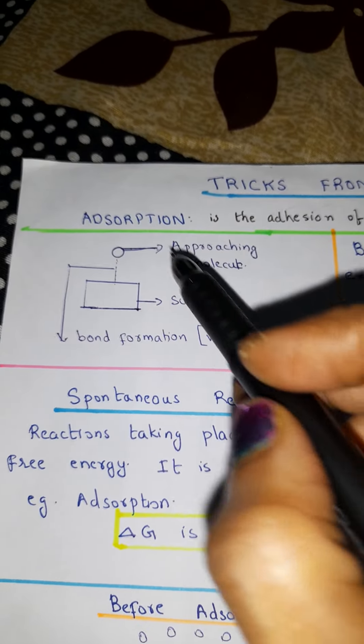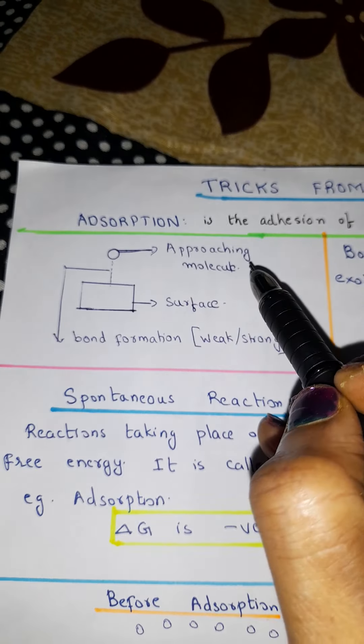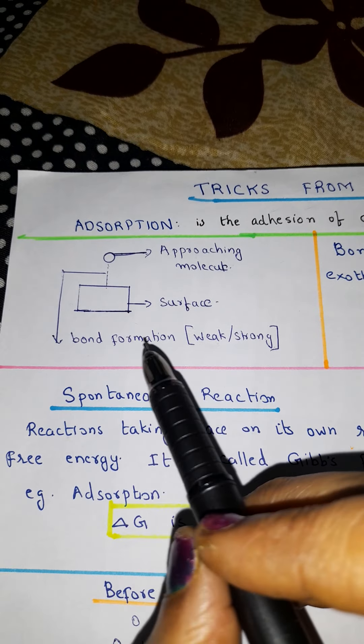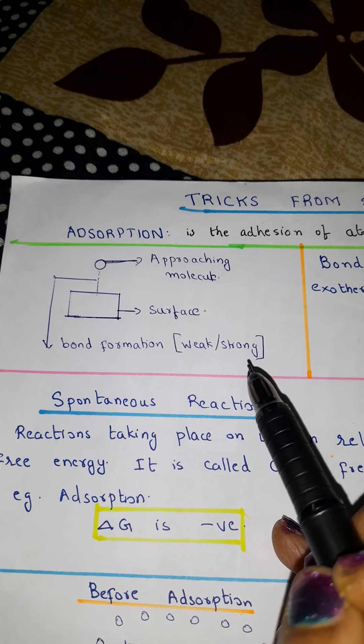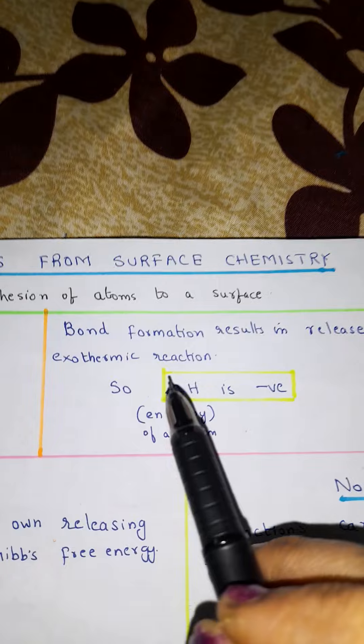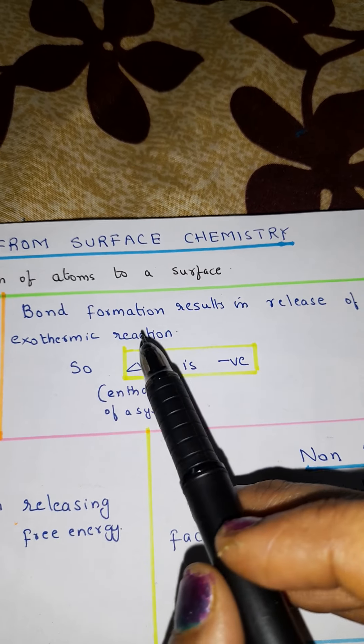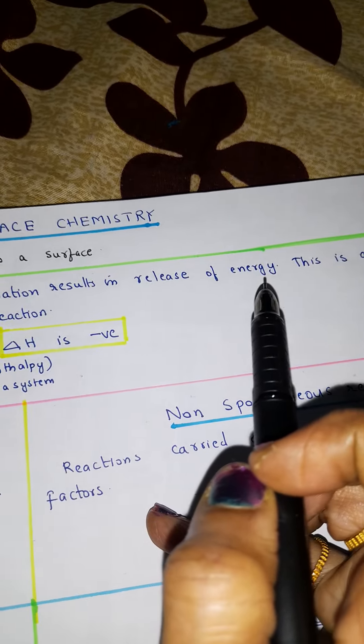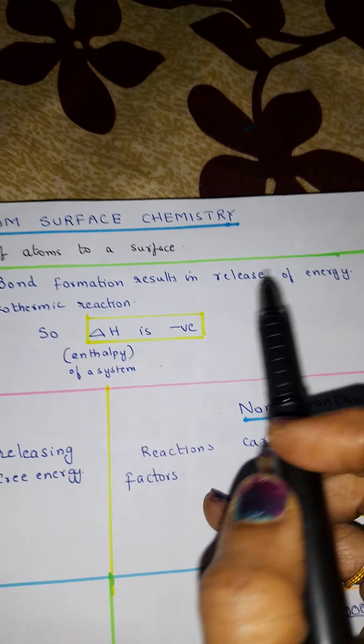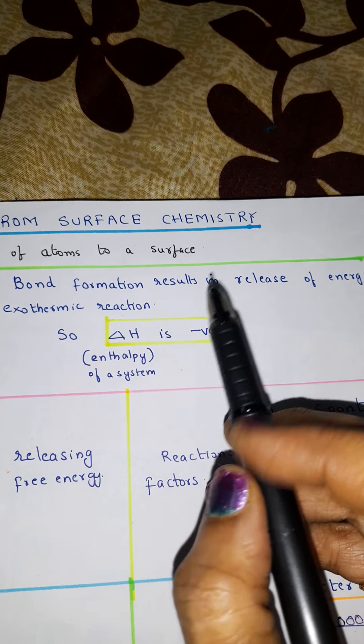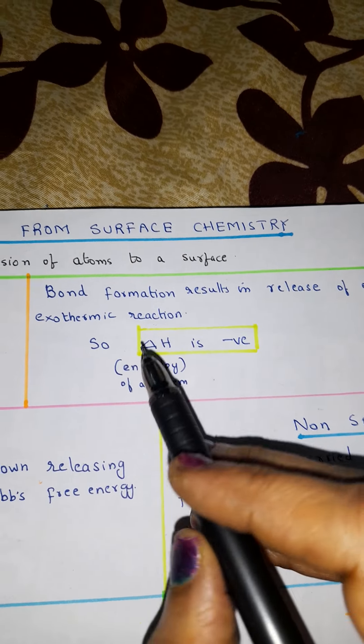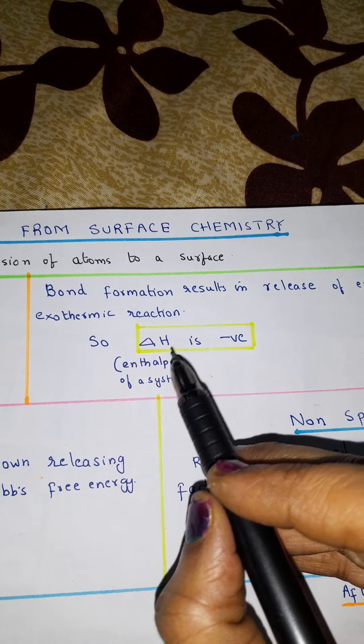Now you can see here in this figure a molecule is approaching the surface for bond formation, whether it be weak bond or strong bond. And here what happens is that when a bond is formed, it results in the release of energy. So what do we call when energy is released? We call it an exothermic reaction.